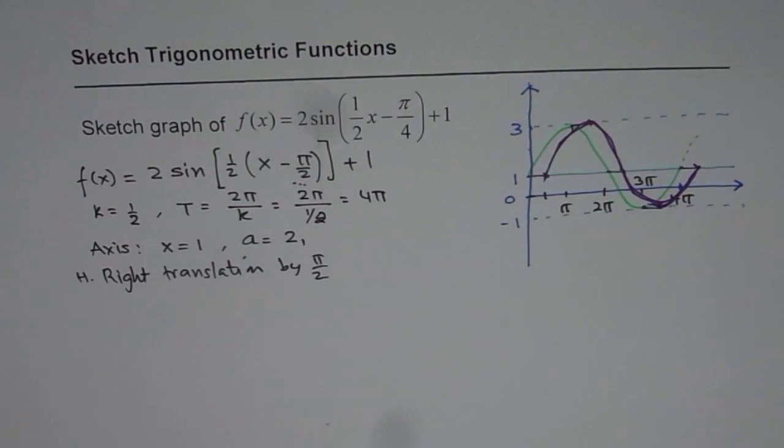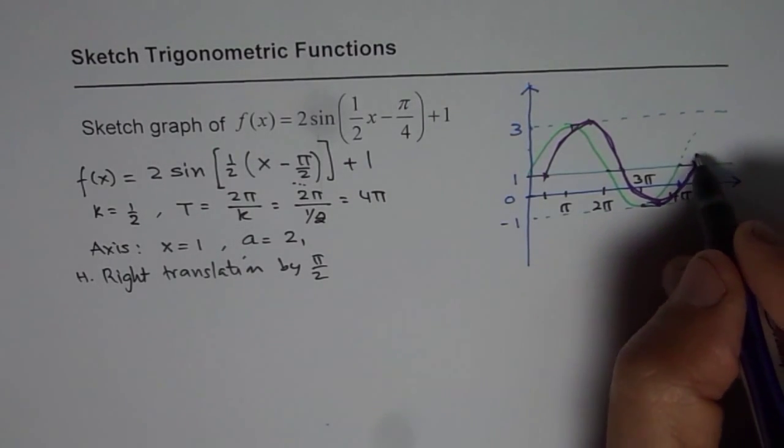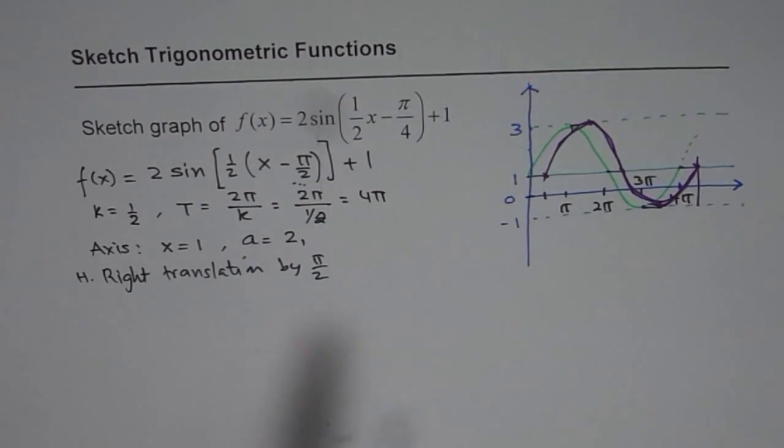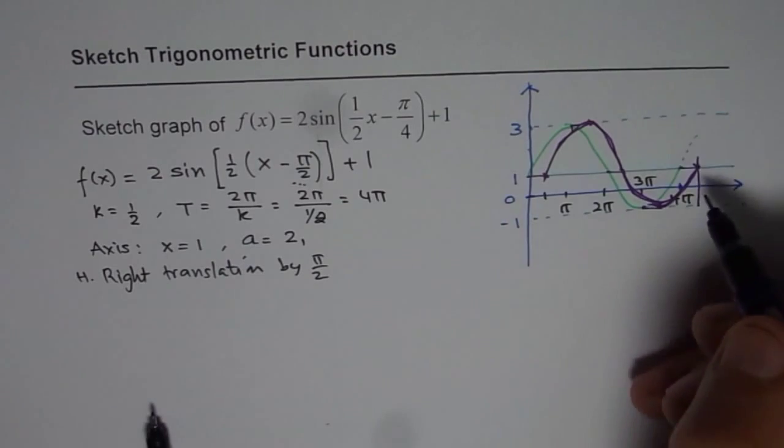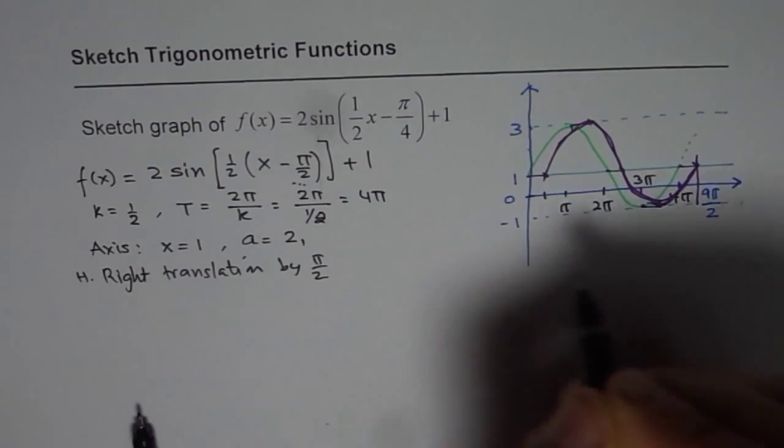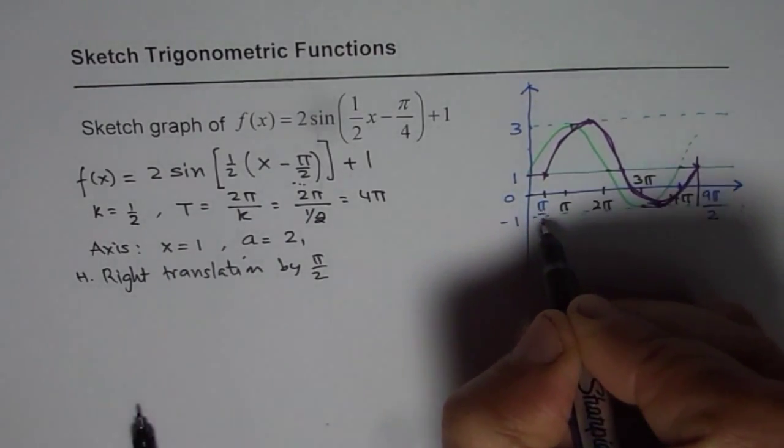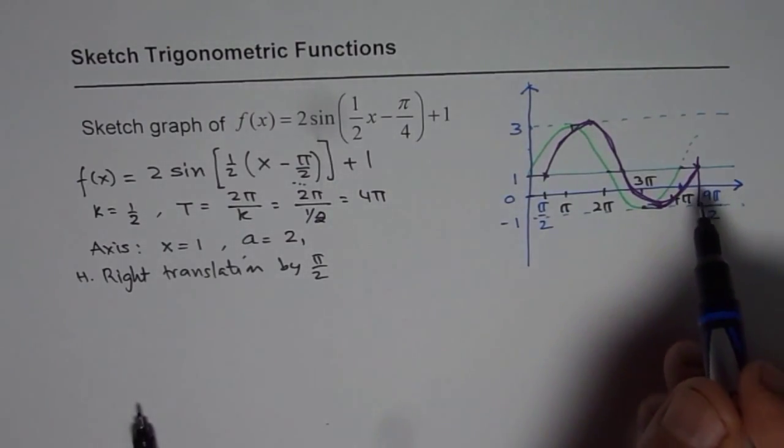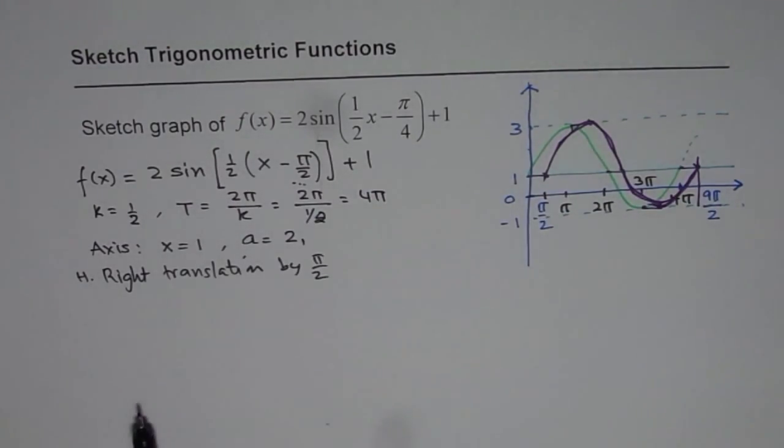So it will end at pi by 2 more than 4 pi. So more than 4 pi, pi by 2 means eight plus one, 9 pi by 2. So it ends at 9 pi by 2 and begins at pi by 2 for one period. So that is how you can actually graph it. I hope the steps are clear.